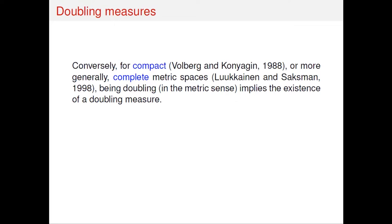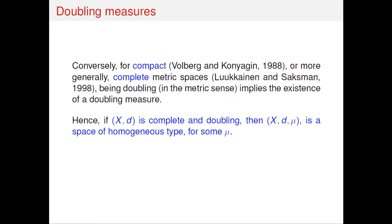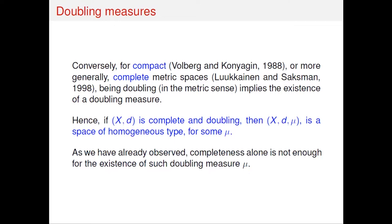For the converse, there was a first result by Buldyrev and Buyarguin in 1988, proving that being doubling and compact implies the existence of a doubling measure. This was extended by Luukkainen and Saksman ten years later to the condition of being complete: being doubling in the metric sense plus completeness already imply the existence of a doubling measure, though using very non-constructive arguments. Being complete alone is not enough.